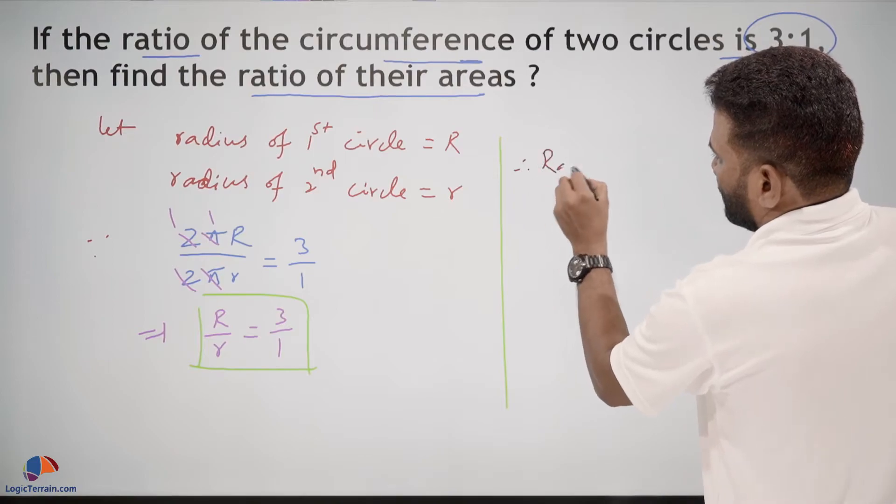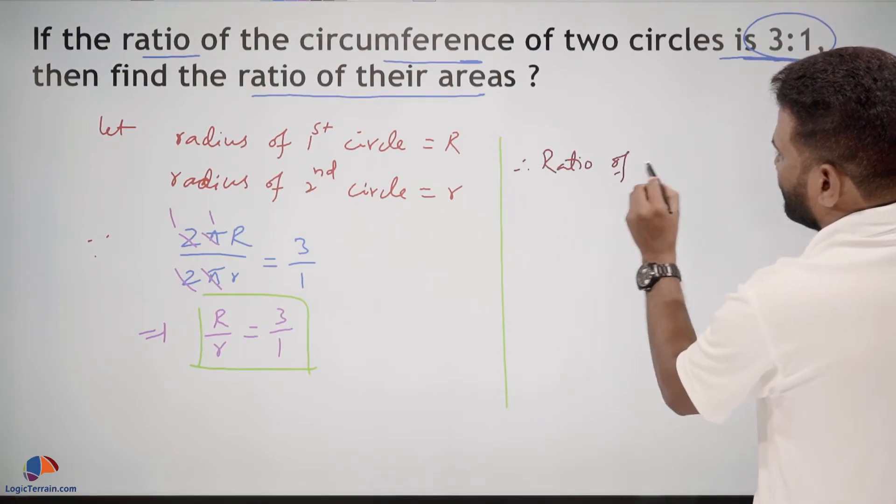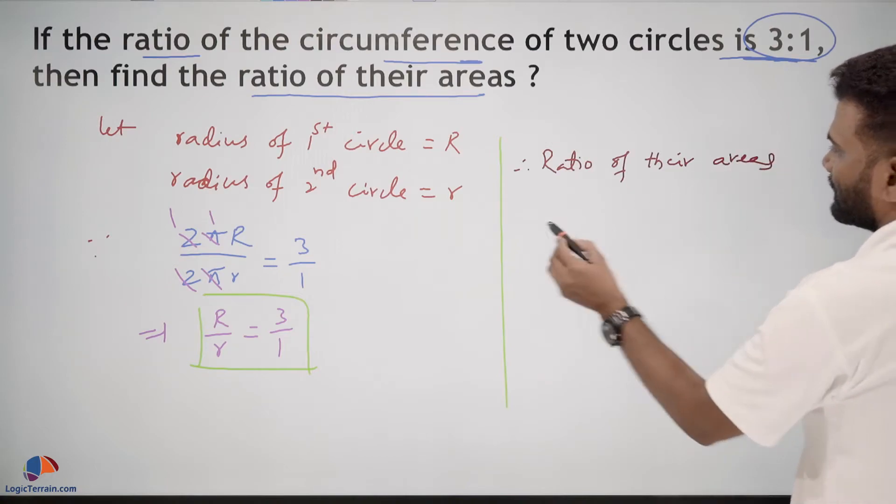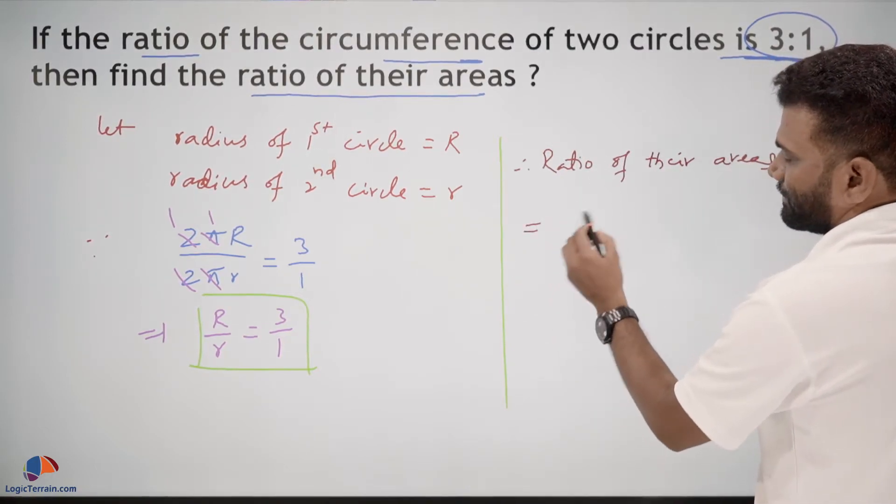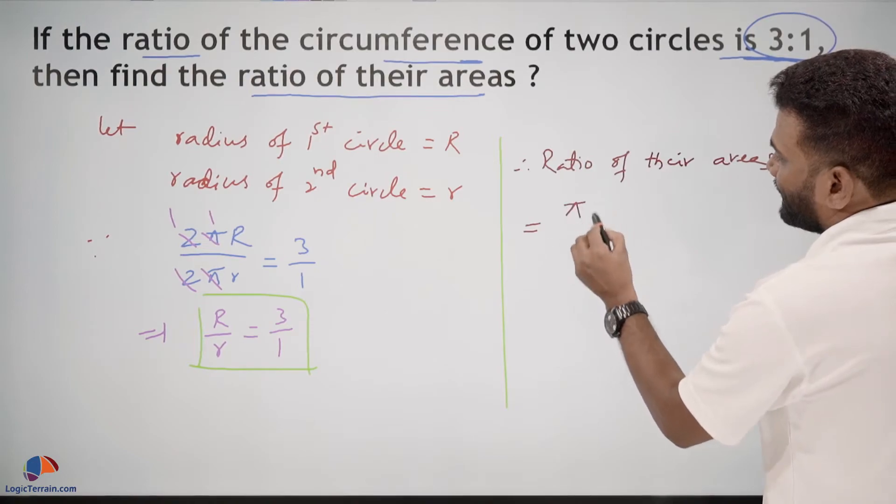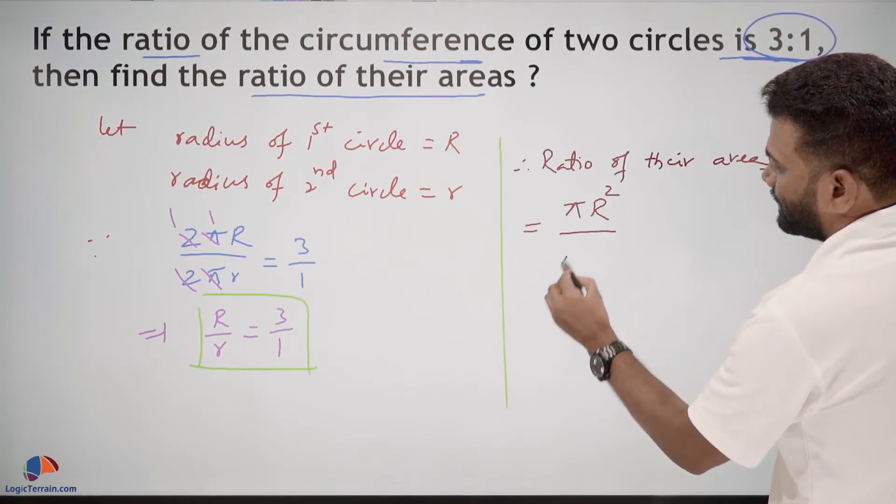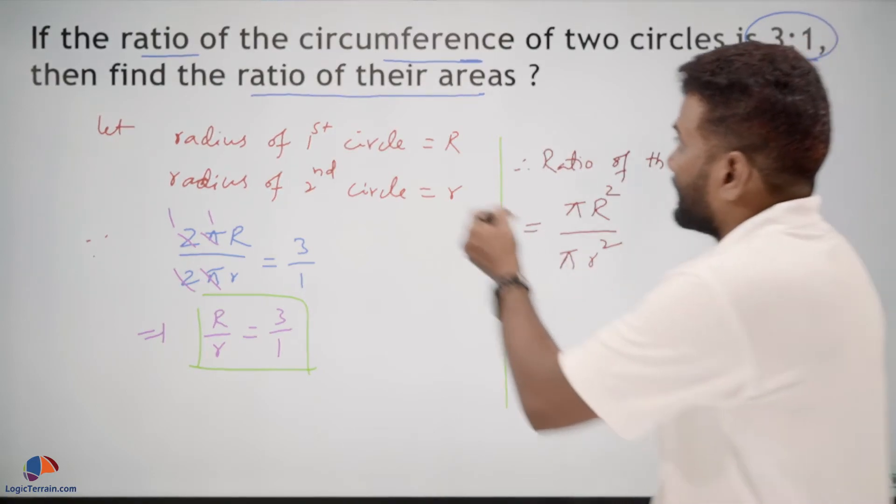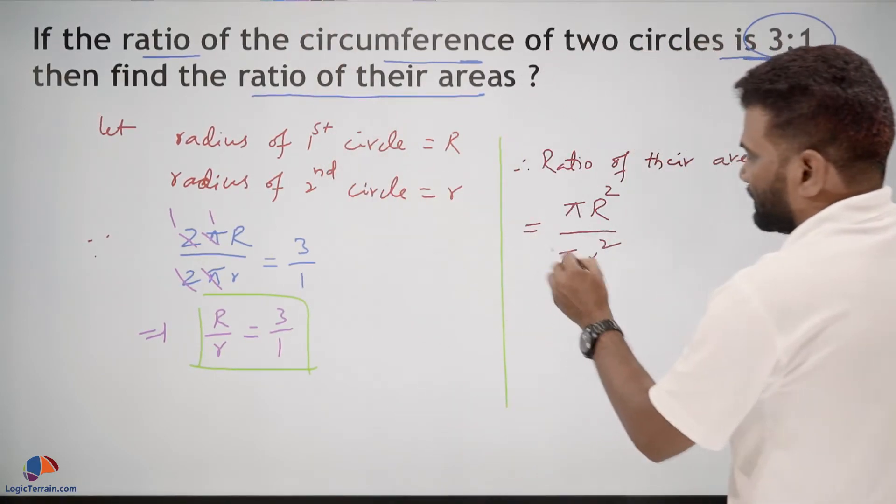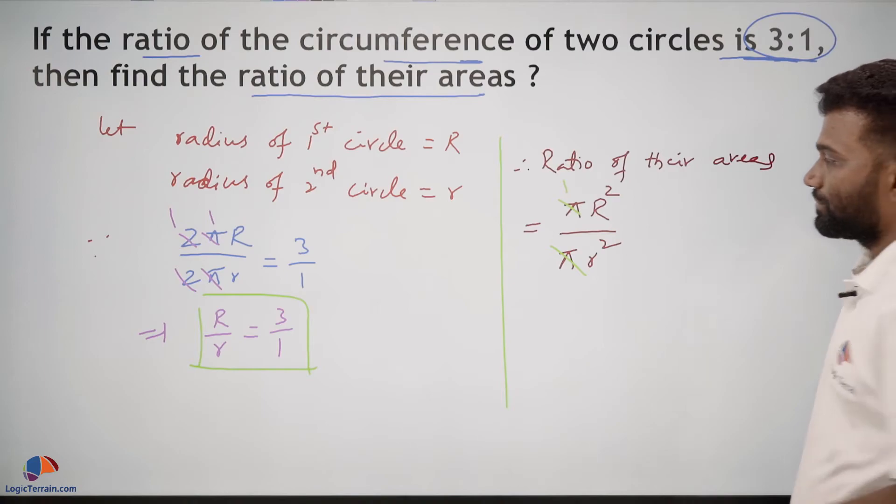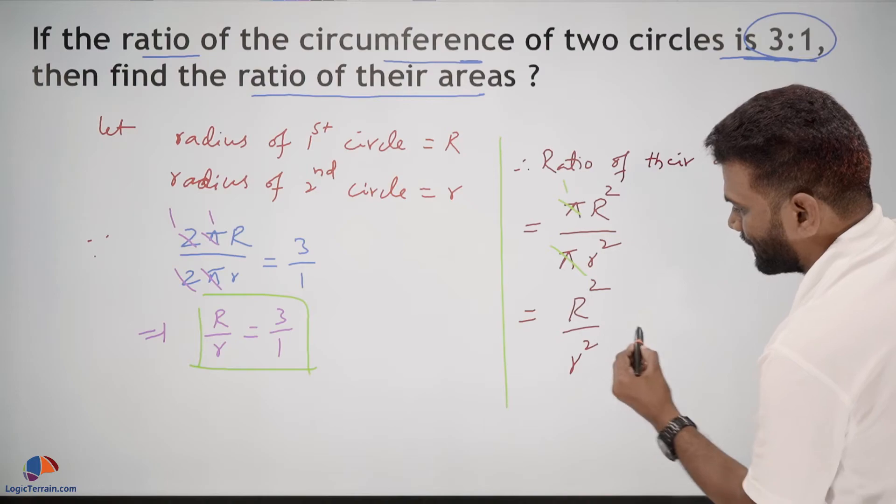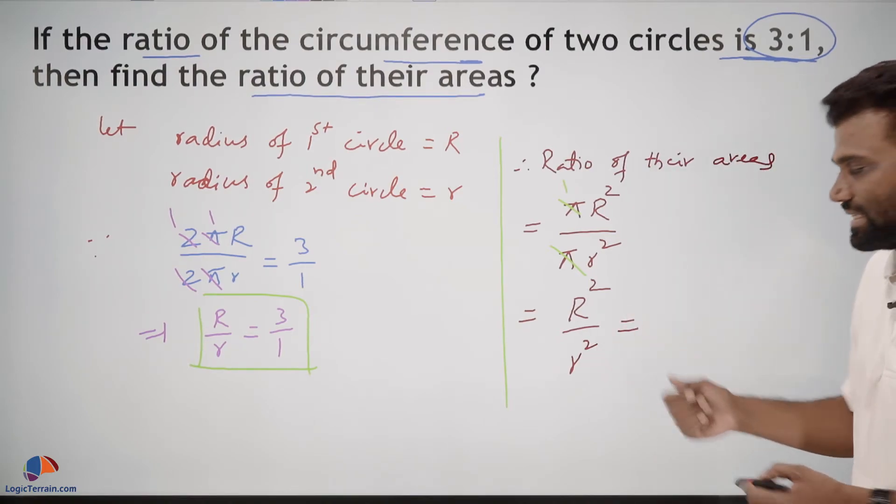Therefore, ratio of their areas equals π capital R squared upon π small r squared. Again here, π gets cancelled, then we have capital R squared upon small r squared.